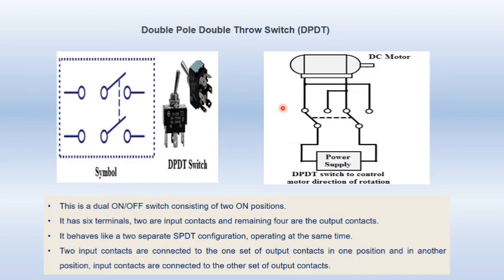Next, we have the double pole double throw switch. Here you can see its symbol and picture. This is a dual on-off switch consisting of two on positions. It has six terminals in total: two are input contacts and the remaining four are the output contacts. In this diagram, as you can see, a DC motor is connected to the output contacts.